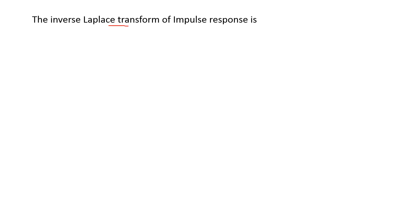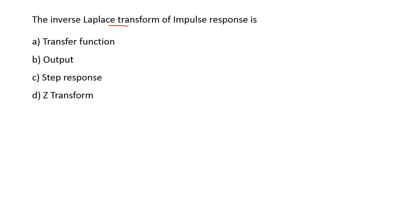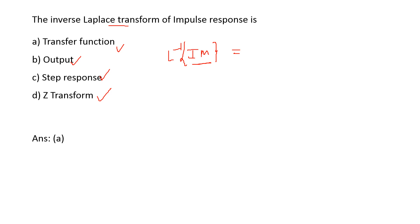Next: the inverse Laplace transform of impulse response is — options are: transfer function, output, step response, Z-transform. The inverse Laplace transform of the impulse response is the transfer function. This is another definition of transfer function beyond the standard Laplace transform ratio. So option A is the right answer.